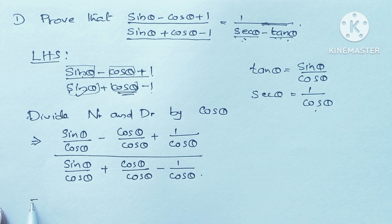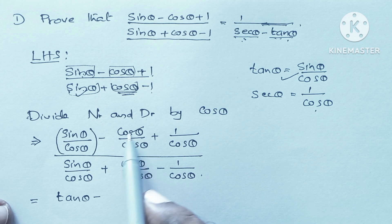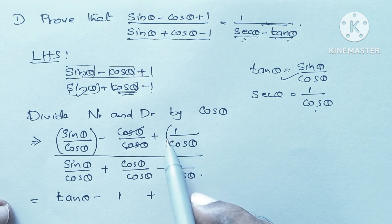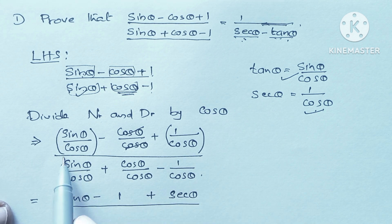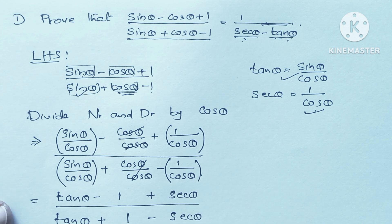Now it becomes: sin θ / cos θ is tan θ; in the numerator, cos θ and cos θ cancel to give 1; and 1 / cos θ is sec θ. So the numerator is tan θ - 1 + sec θ. The denominator: sin θ / cos θ is tan θ, cos θ / cos θ becomes 1, minus 1 / cos θ which is sec θ. So the denominator is tan θ + 1 - sec θ.